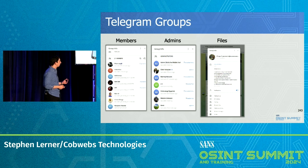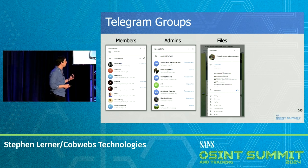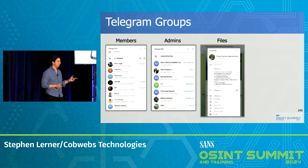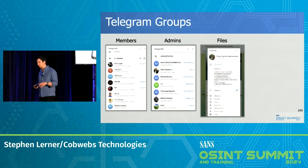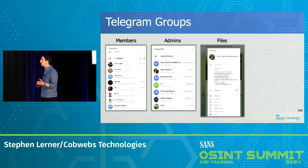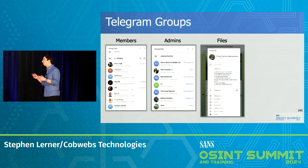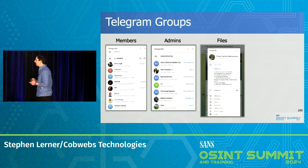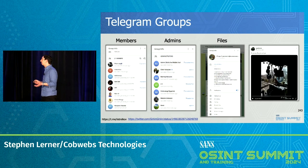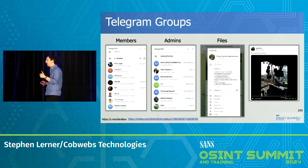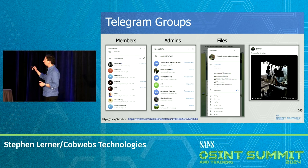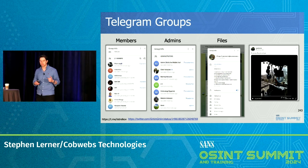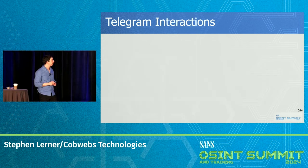This is the Telegram channel of Igor Gherkin. He was a Russian military commander who was actually responsible for shooting down the Malaysia Airlines flight over Ukraine a couple of years ago. So this is his Telegram channel, which if you're investigating Russia's invasion of Ukraine, he's a good place to start from. He actually posted on Twitter a couple of days before the war started some Russian soldiers who were staging for the invasion.